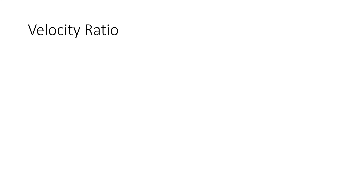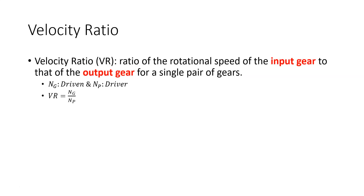Starting with the first one, let's first look at the velocity ratio and go over this concept because it's going to be important for all the problems, particularly for the first one with the compound gear train. The velocity ratio is the ratio of the rotational speed of the input gear to that of the output gear for any single pair of gears. We're looking at this in terms of the teeth — you've got the driven and the driver. So the velocity ratio is the ratio of the driven over the driver gear.